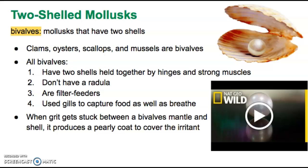Sometimes, however, grit gets stuck between the two shells and the mantle, which is in charge of producing new shell. When this happens, the bivalve produces a pearly coat to cover the irritant and keep it from interfering with essential functions. That pearly coat, added layer after layer, forms a pearl — like the pearls used in jewelry today. There's a video linked on my website under today's homework about how pearls are formed.